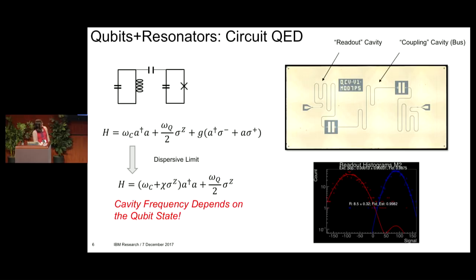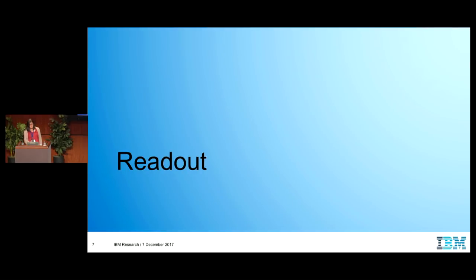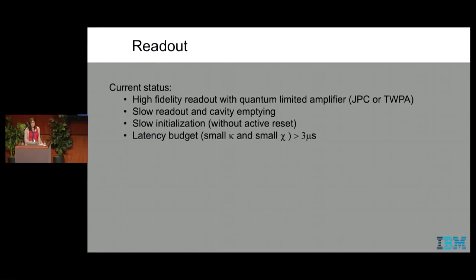Typically, we would have an amplifier attached to the readout resonator, and we could do a high fidelity readout. Here's a histogram of the ground state and the excited state of the qubit, and you could see that the states are very well separated — you can get a readout fidelity from that. Currently, we have high fidelity readout using quantum-limited amplifiers such as JPCs and TUPAs. But right now, we have fairly slow readout and cavity emptying, due to our design having a relatively small chi and kappa.